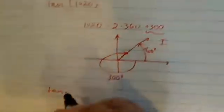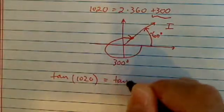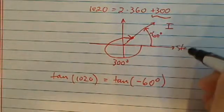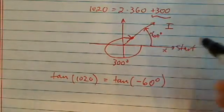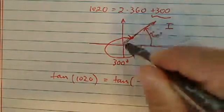So therefore, tangent of 1020 is equal to tangent of minus 60. The reason minus 60 is I have to start over here on my x-axis, right? And then in order to end at the same terminating arm, which is here.